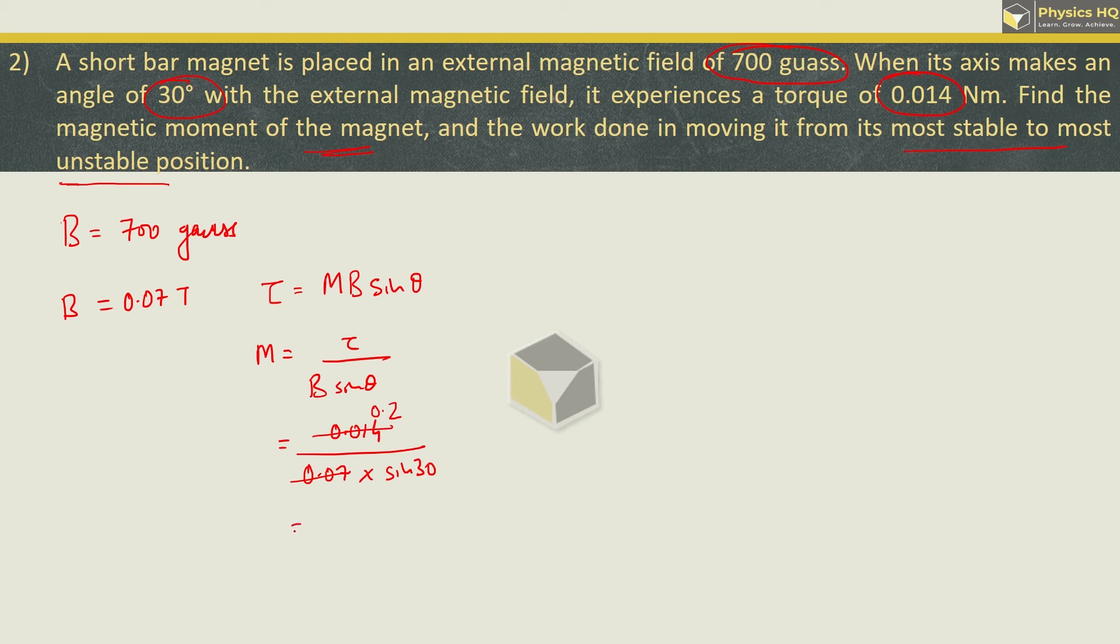So, it will be 2. Finally, we will have magnetic moment as 0.2 into 2, which is 0.4 Ampere meter square. Next, they have asked to find the work done in moving it from the most stable to the most unstable position.